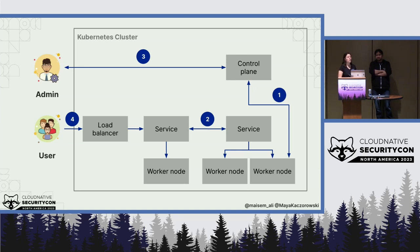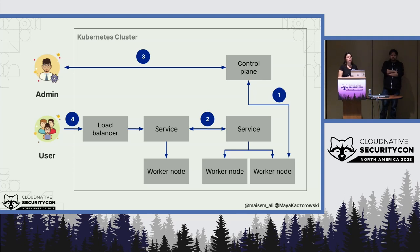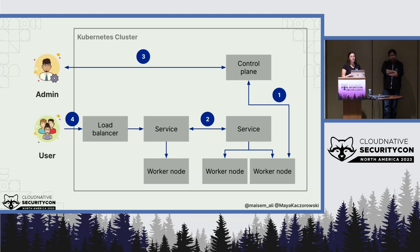The second kind of traffic is traffic from a service to a service, such as from a front-end application to a database. This can be both intra- or inter-cluster. It might be coming from another Kubernetes cluster if the two applications are in different trust domains, hosted on different platforms, or managed by a different team, or if you're using a microservice architecture and the full app runs across multiple clusters. This service-to-service traffic is often controlled, monitored, and secured using a service mesh.